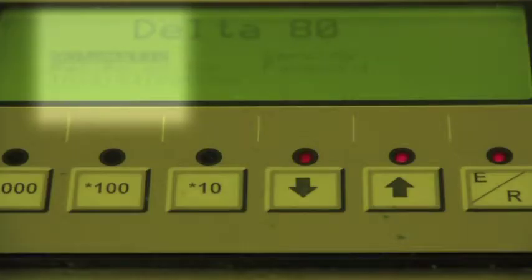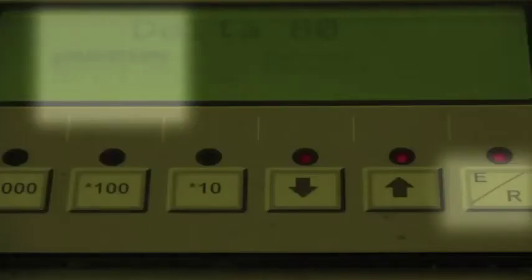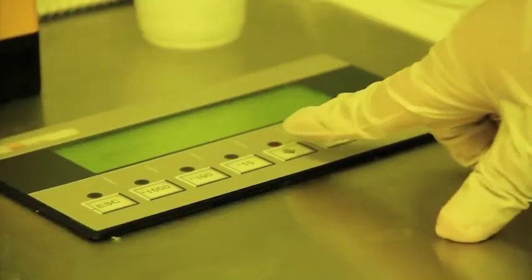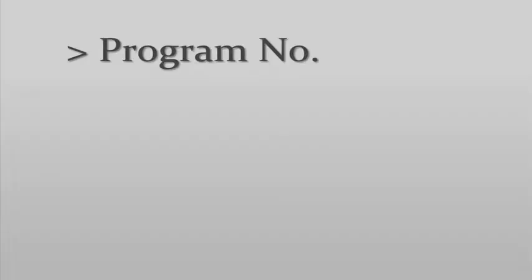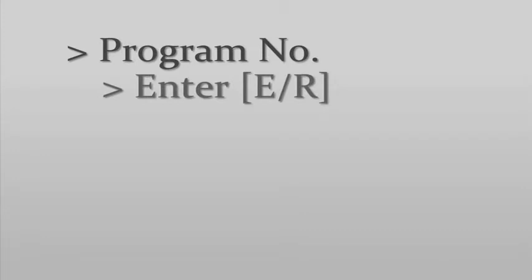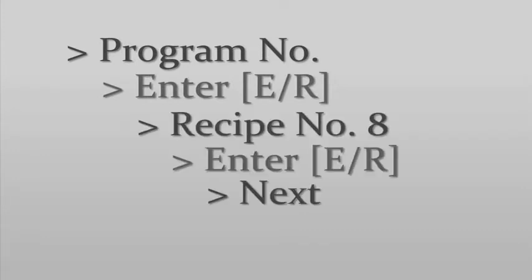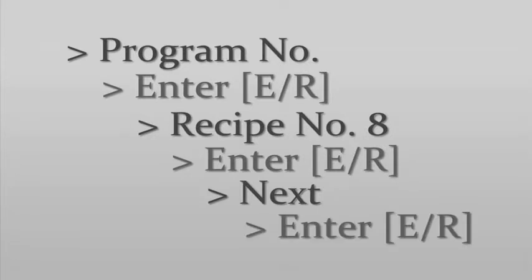Press enter and on the next window, use the arrow button to move the cursor to the program number and press enter to activate the cursor. Then press the arrow buttons to change the program to number 8. Press enter to confirm. Press the arrow button again to move the cursor to next, then enter to complete the process. The spin coater is now ready for use.